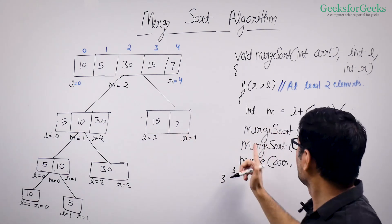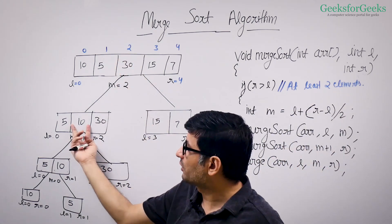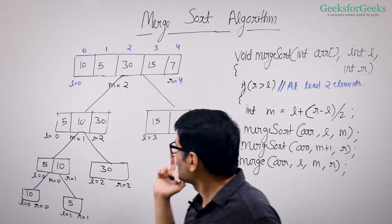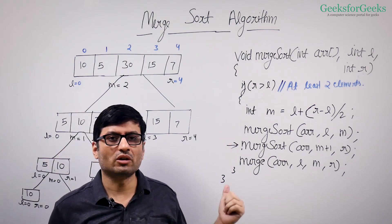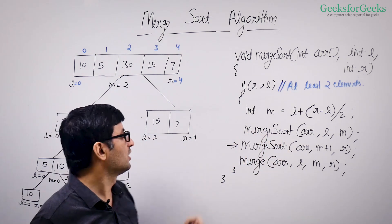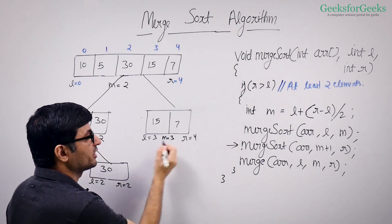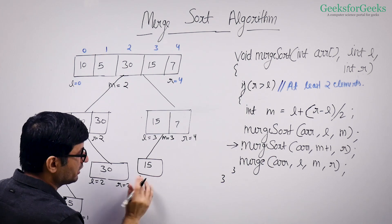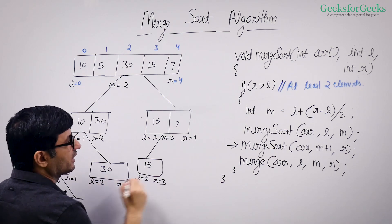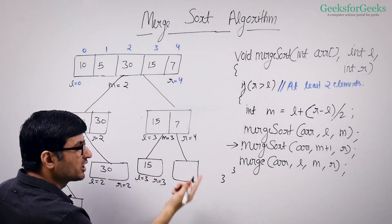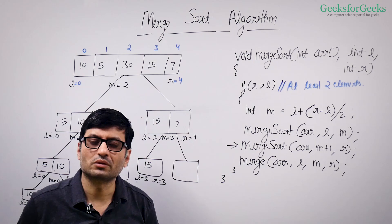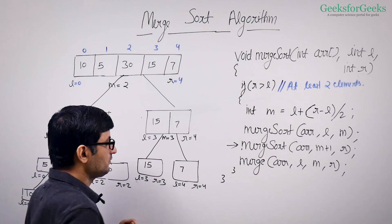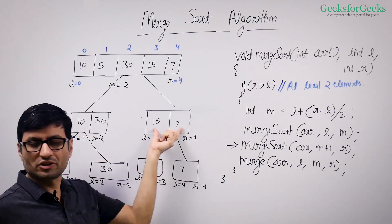The original function call got the control back and started executing the next line — the right recursive call. This recursive call will first find the midpoint: (3 plus 4) divided by 2, which is 3. So it will make two recursive calls: L to M, which is 3 to 3, and M plus 1 to R — M plus 1 is 4, so L=4 and R=4, which is element 7. Once these two single-element calls are over, this will merge, making the result 7 and 15.